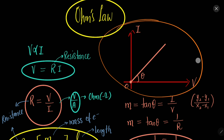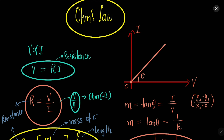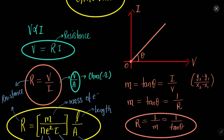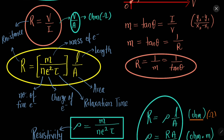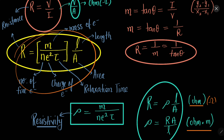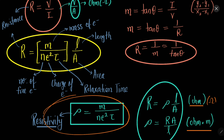There is a formula for resistance. In this formula, M is the mass of electron, N is the number of electrons, E is the charge of electron, tau is the relaxation time, L is the length of the wire, and A is the area of cross section. Resistance has the unit ohm. Resistivity is the initial term M/(Nе²τ) in the formula and its unit is ohm·meter. Resistivity is also called specific resistance.